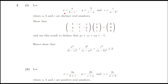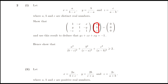Let x be equal to a over b minus c, y be equal to b over c minus a, and z be equal to c over a minus b, where a, b, and c are distinct real numbers. Show that the product of this 3 by 3 matrix — with entries 1 minus x, x, y, 1 minus y, minus z, z, and 1 — multiplied by the column matrix a, b, c is equal to the zero column matrix.